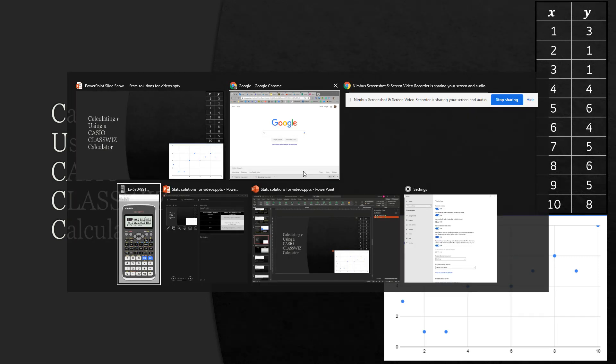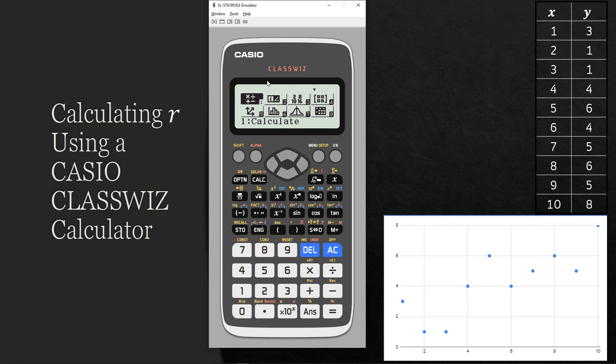So the calculator. Once you turn it on you'll probably see this screen. We would then want to go into option number six, which is statistics. You can either press the six on the keyboard and it'll take you straight there, or you can use the arrow keys and highlight it and then press equals once it's highlighted.